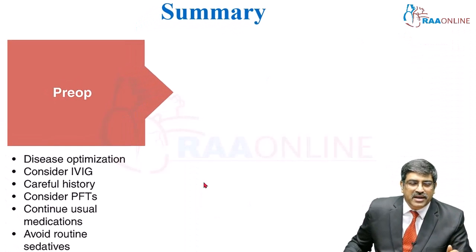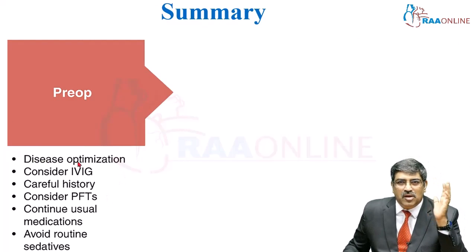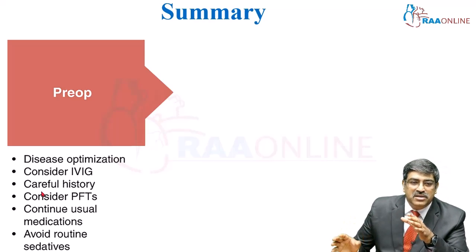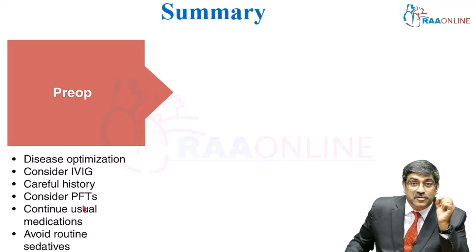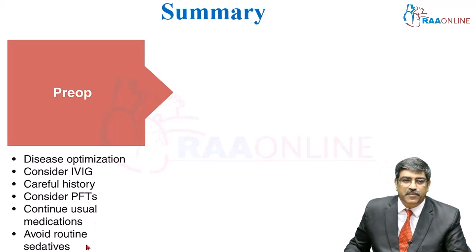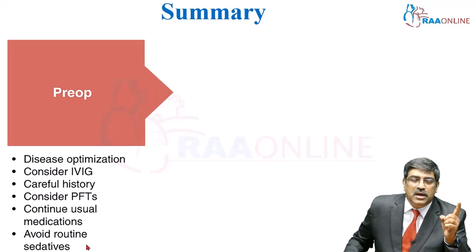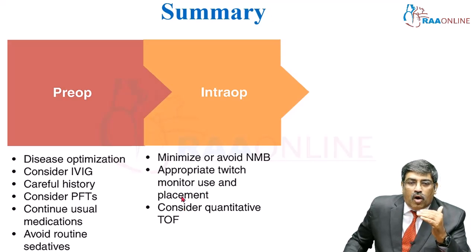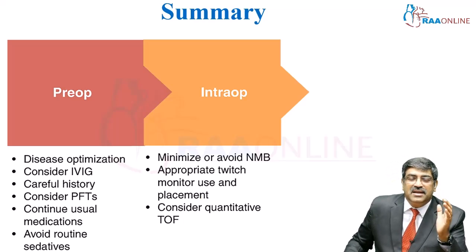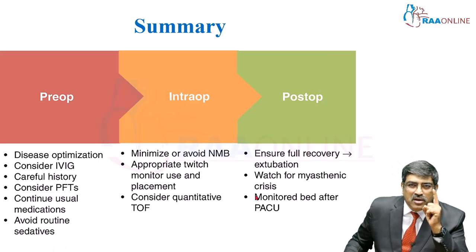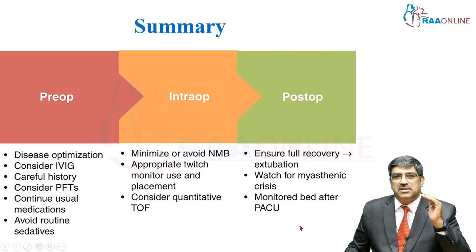To summarize the anesthesia findings: in the preoperative period, don't take up the case unless the patient is optimized. Consider intravenous immunoglobulin preoperatively. Take a careful history about myasthenic and cholinergic crisis. Consider pulmonary function tests, which are very important to determine whether the patient might need mechanical ventilation postoperatively. Continue usual medications till the day of surgery and avoid routine sedatives which may increase respiratory depression. In the intraoperative period, minimize or avoid neuromuscular blockers, always use a nerve stimulator, and consider regional anesthesia to reduce general anesthesia requirements. In the postoperative period, unless you are sure about full recovery, don't extubate, watch for myasthenic crisis, and always have a monitor in the post-anesthesia care unit.